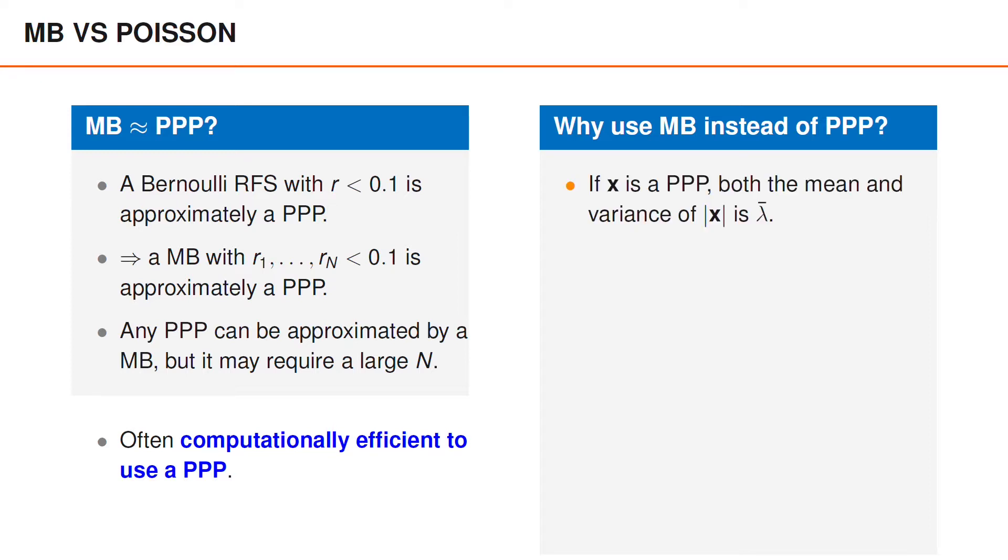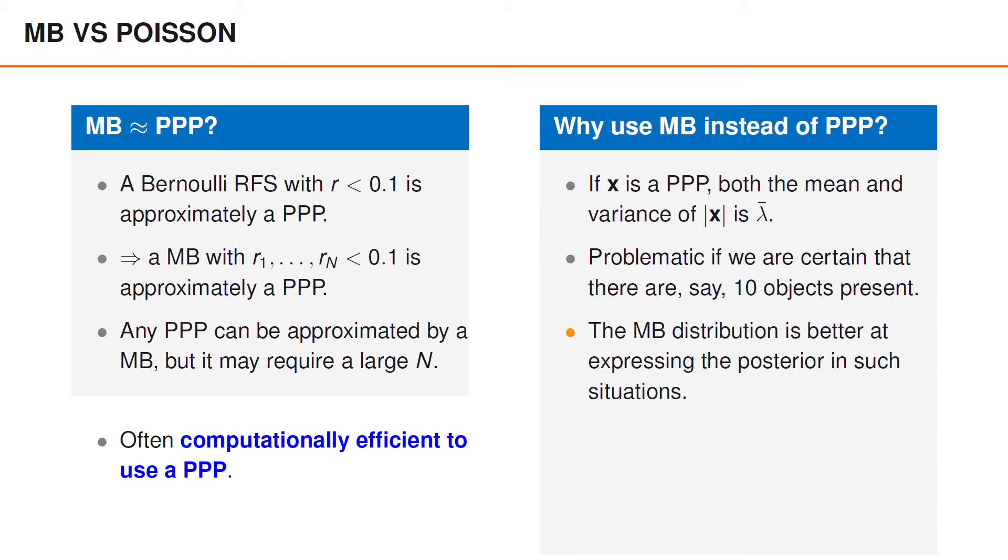Well, as you know, the cardinality of a Poisson point process is Poisson distributed, which means that both the mean and the variance of the cardinality is equal to the Poisson rate. This is problematic in certain cases. Imagine that you want to approximate your posterior distribution using a Poisson point process, and that you know that precisely 10 objects are present. If you then set the mean of the cardinality to 10, you are forced to also set the variance of the cardinality to 10, even though you know that the number of objects is 10. In situations like these, the multi-Bernoulli process may be more suitable since it can easily set the existence probability to 1 for 10 different objects and thereby represent certainty in the number of objects.